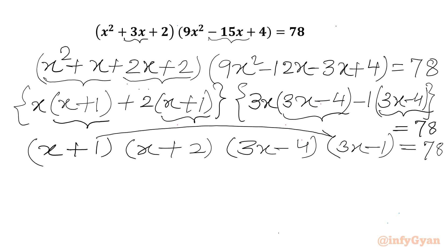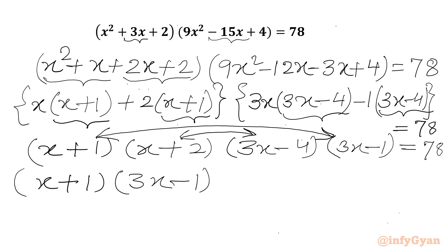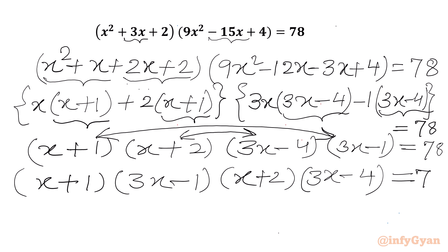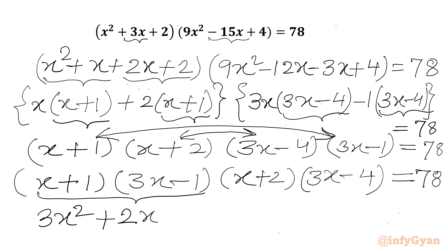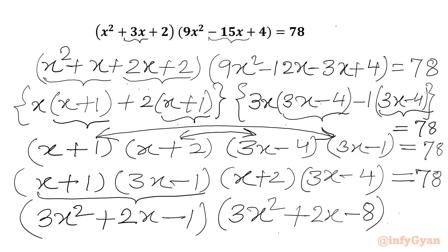Now I will regroup these factors together as multiplier brackets: (x + 1)(3x - 1) and (x + 2)(3x - 4). Multiplying (x + 1)(3x - 1): x·3x - x + 3x - 1 = 3x² + 2x - 1. Multiplying (x + 2)(3x - 4): 3x² - 4x + 6x - 8 = 3x² + 2x - 8. So our equation is (3x² + 2x - 1)(3x² + 2x - 8) = 78.